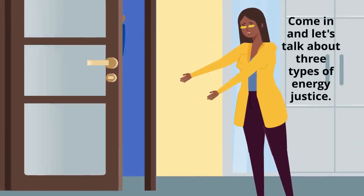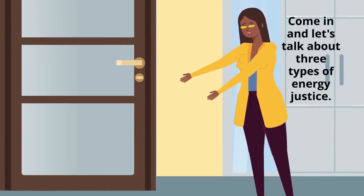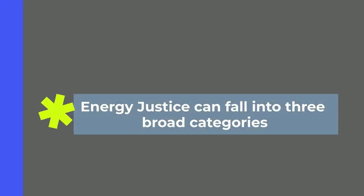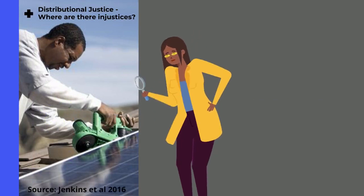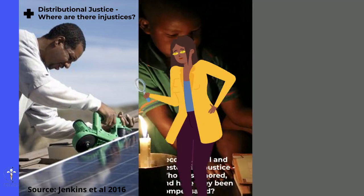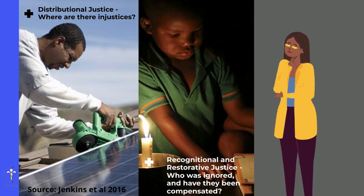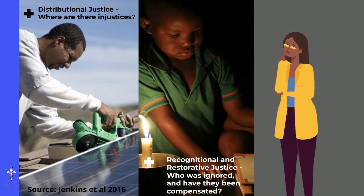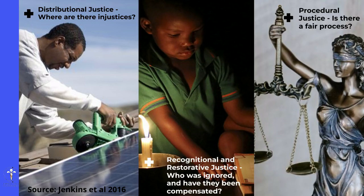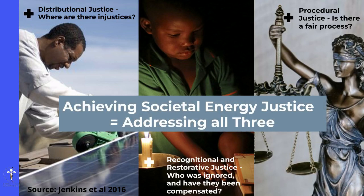Let's talk about three types of energy justice. Energy justice can fall into three broad categories. The first is distributional justice, which asks the question: where are there injustices? The second, recognitional and restorative justice, asks: who was ignored and have they been compensated? The last, procedural justice, asks if there is a fair process. Achieving societal energy justice requires addressing all three.